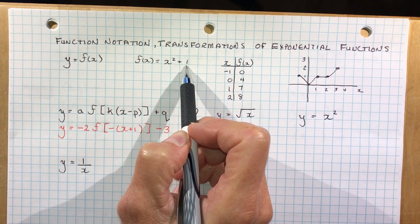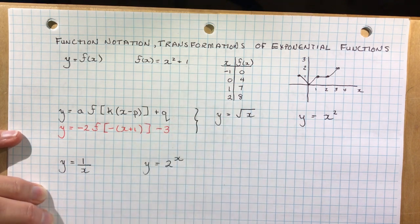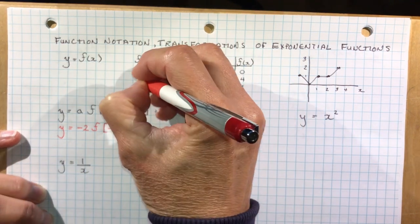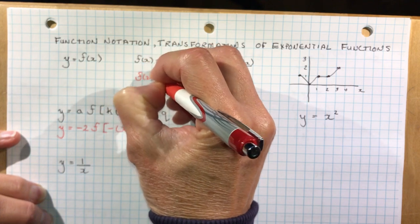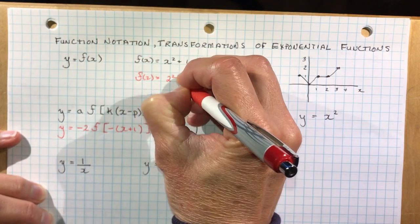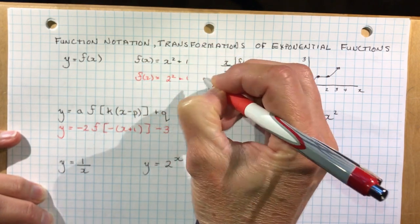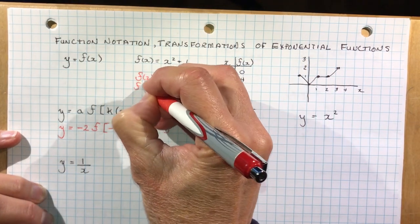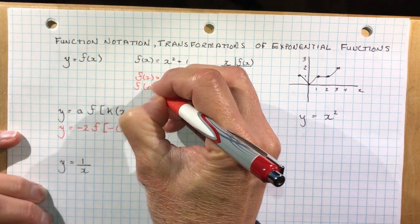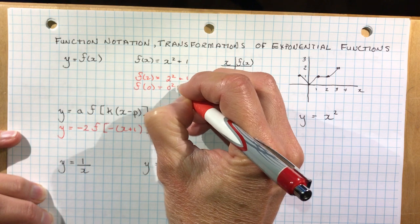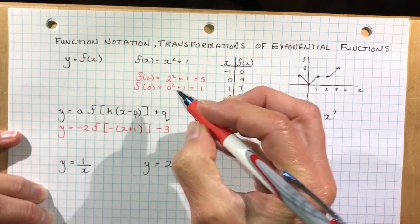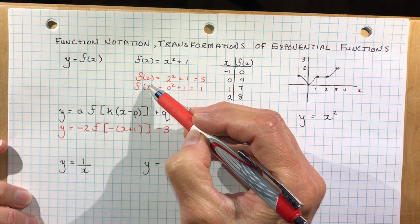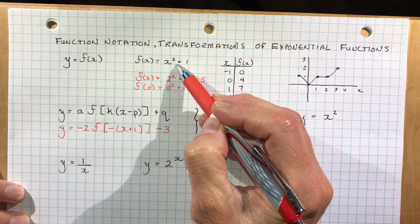And if I asked you what is f at 2? You'd say f at 2 would be equal to 2 squared plus 1, which is 5. If I said what's f at 0? You'd say 0 squared plus 1, and so on. So this is just telling you what you've plugged in for x into the equation.